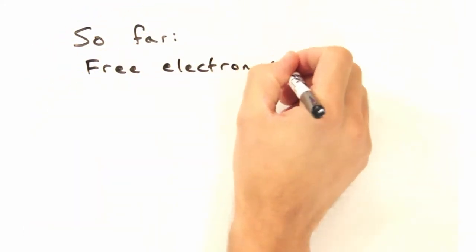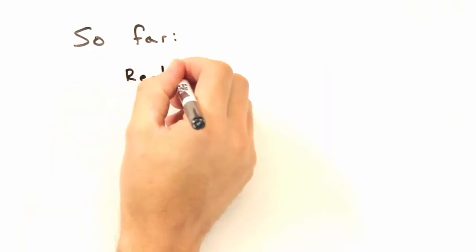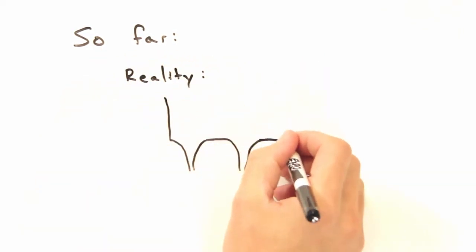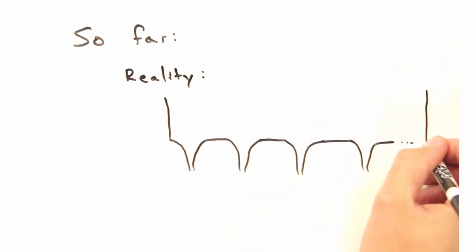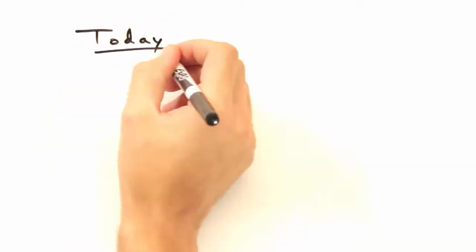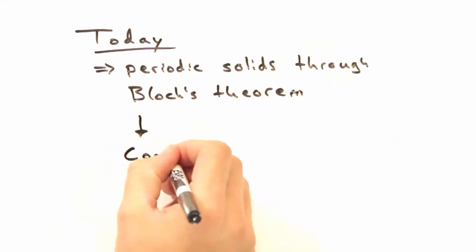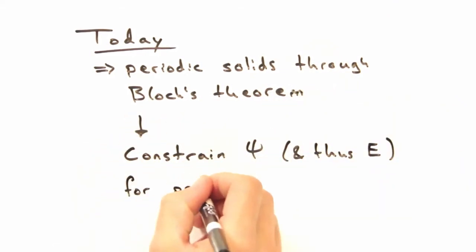So here we go. Up until this point, we've used the free electron model, which assumes an infinite square well as the system potential. But it turns out the potential is not flat within the box. In reality, atoms create these potential wells that are periodic within our box. Today our goal is to consider a periodic solid through Bloch's Theorem. Well what's Bloch's Theorem? It's just a way to understand the wave functions and energies for periodic solids. And it comes down to two postulates.